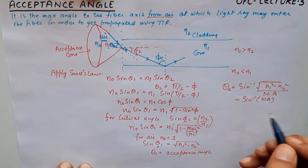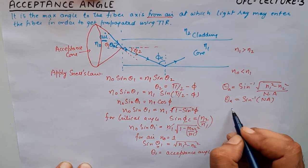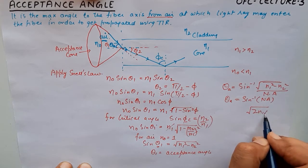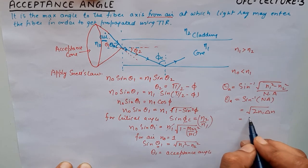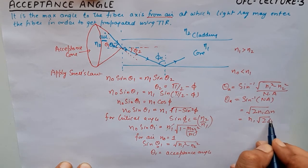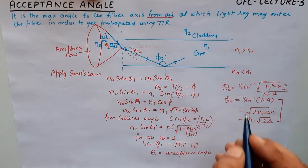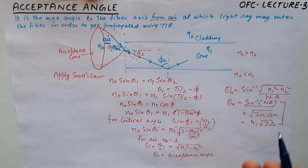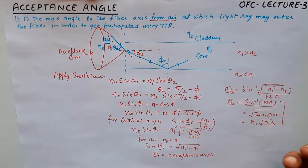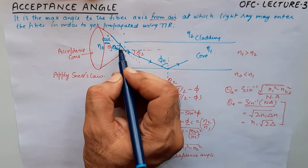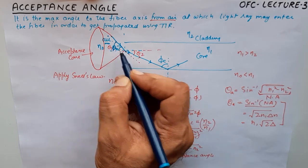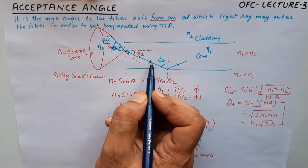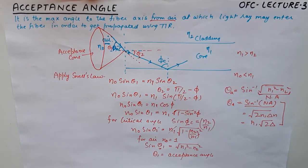This quantity under the square root — eta1 squared minus eta2 squared — is nothing but the numerical aperture. So the acceptance angle is sin inverse of the numerical aperture. The numerical aperture also has other forms of this formula, which you can see in the video on numerical aperture. If you know the numerical aperture you can find the acceptance angle. Anything less than the acceptance angle is acceptable, because it will facilitate total internal reflection.